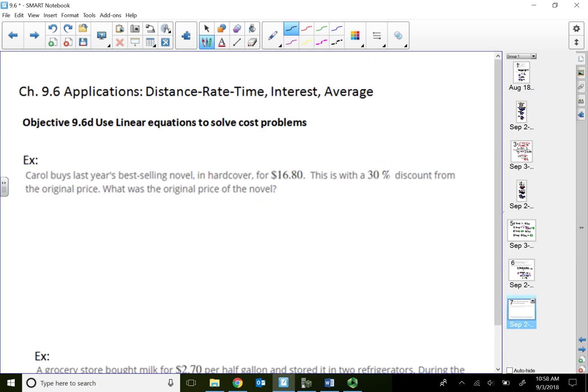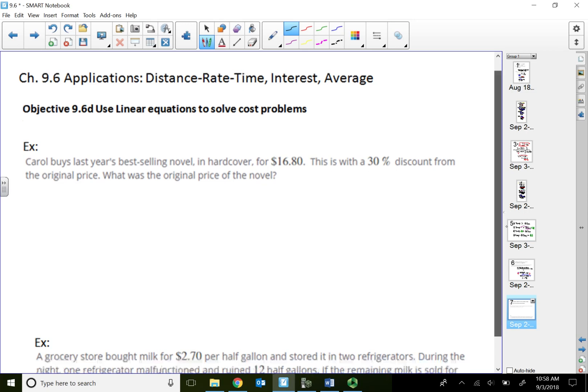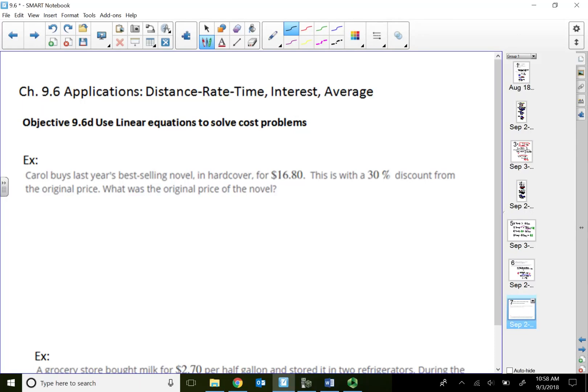All right, now take a look at the cost problems. So these problems are not involving any sort of translation, like more than, less than, twice. We just got to think about what these problems are saying in order to write out the equation. So Carol buys last year's bestselling novel in hardcover for $16.80. This is with a 30% discount. So what is this referring to? This is referring to the $16.80. So the $16.80 is with a 30% discount. So that means the $16.80 is already after the 30% discount. So the question is asking, what was the original price?